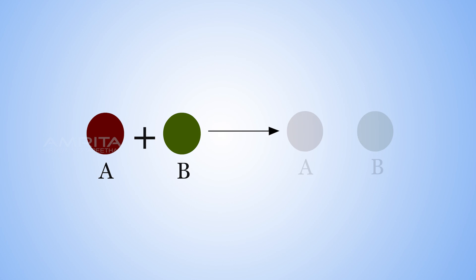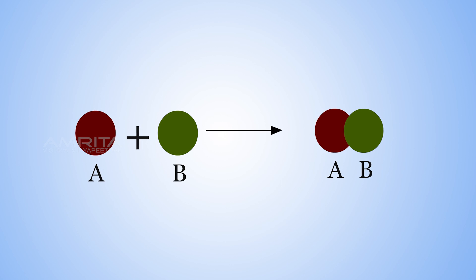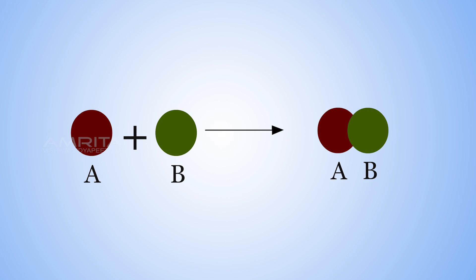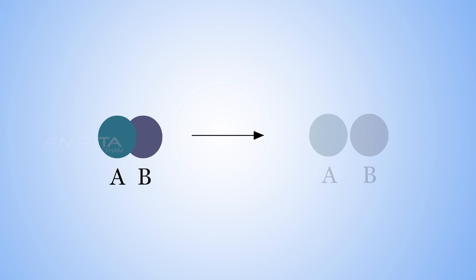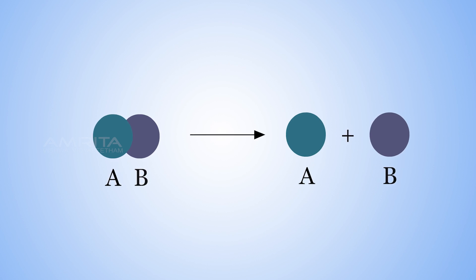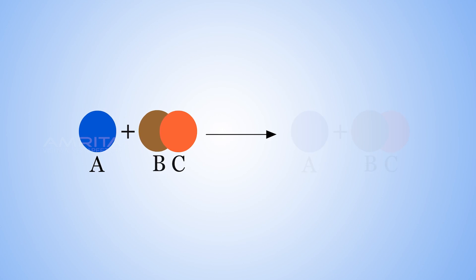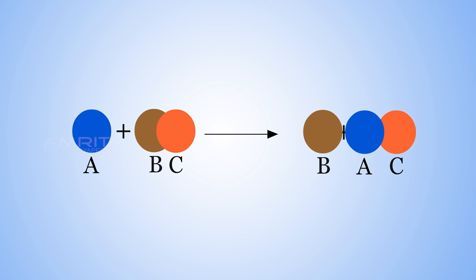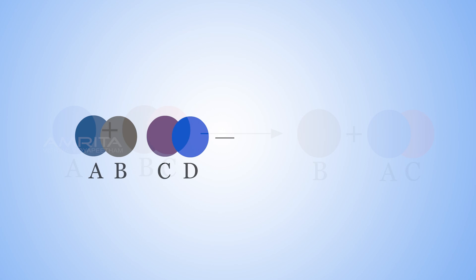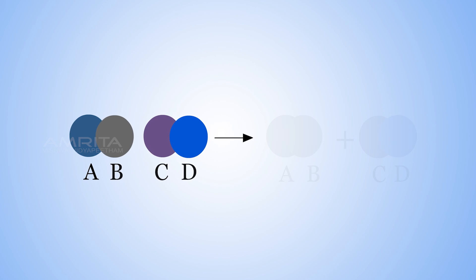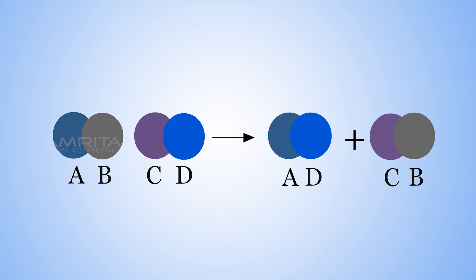Combination or synthesis reactions are those in which two or more chemical elements or compounds unite to form a more complex product. Decomposition reactions are those in which a compound is decomposed into smaller compounds or elements. Single displacement reactions are characterized by an element being displaced by a more reactive element. Double displacement reactions represent those reactions in which two compounds exchange ions or bonds to form different compounds.